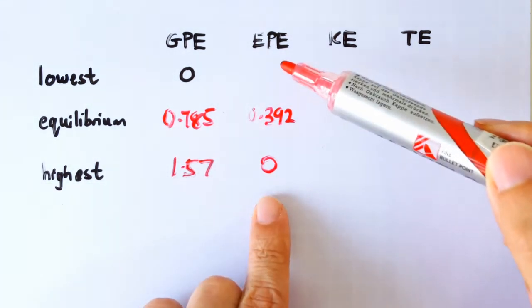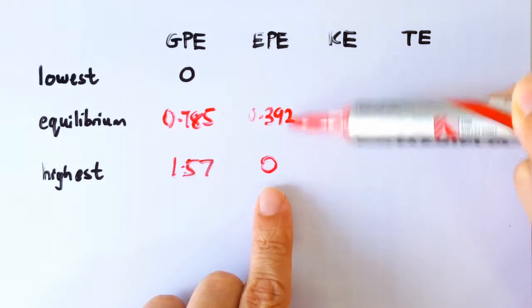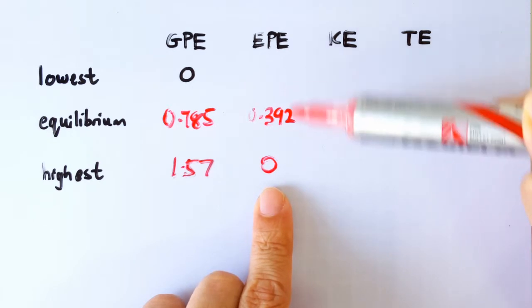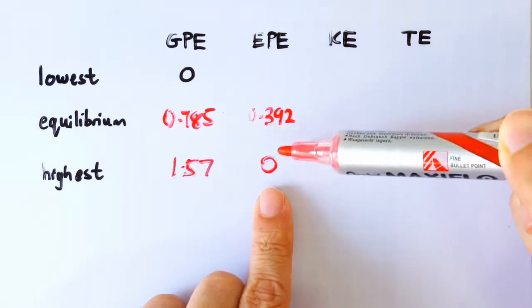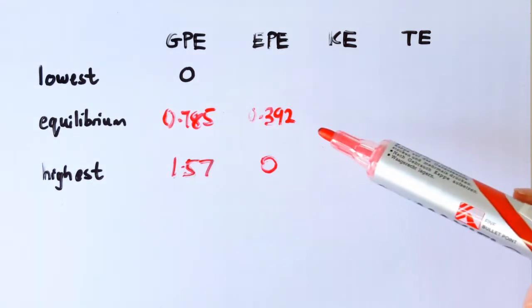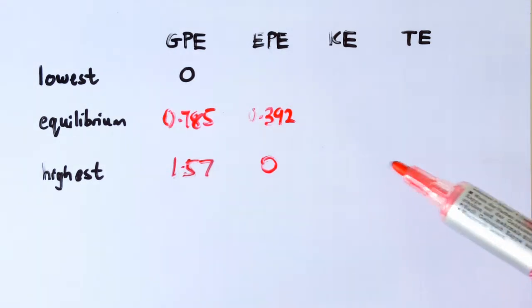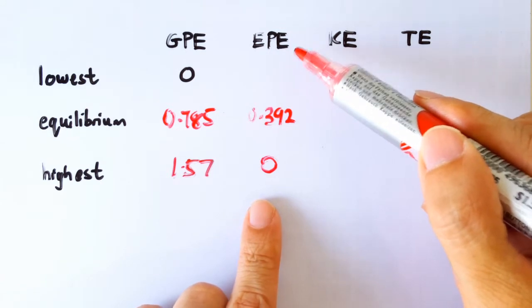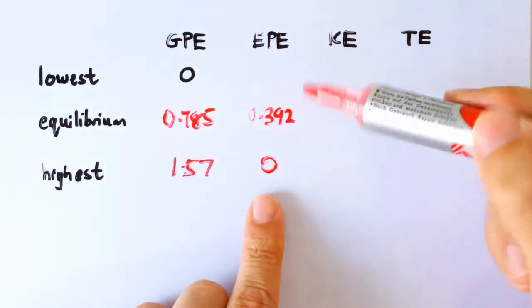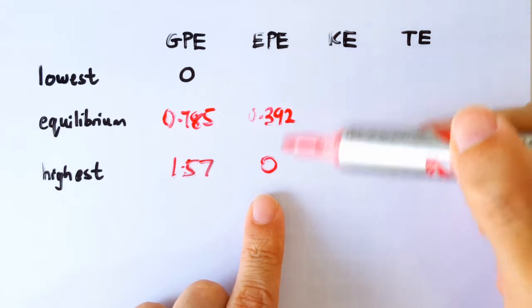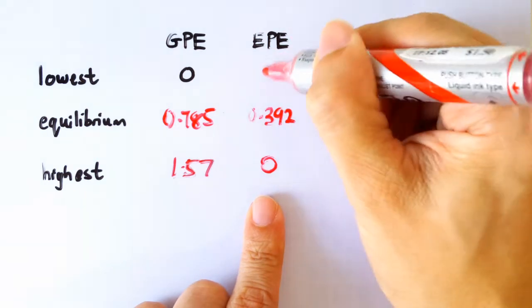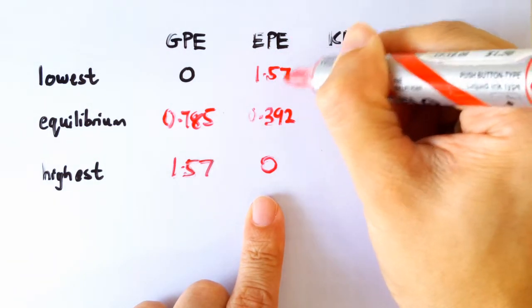Okay, to fill this box here, you got to realize that when we go from here to here, we are doubling the extension of the spring. So if you double the extension, the EPE should be multiplied by four times. This is because EPE is half KX squared, extension squared. So if the extension is doubled, the EPE must be quadrupled. So you take this number, multiply it by four times, you get 1.57.